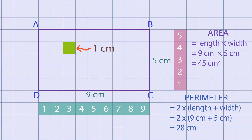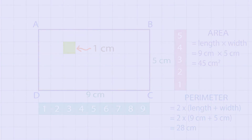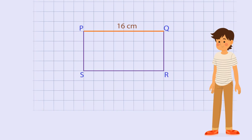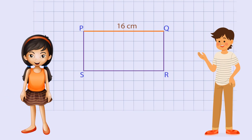Very interesting, isn't it? Now, observe. Michael draws a rectangle PQRS in a square grid. Its length PQ is 16 cm. He asks his friend Monica to find the area and perimeter of the rectangle.